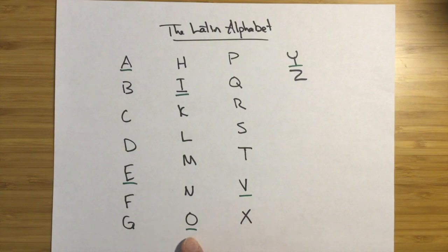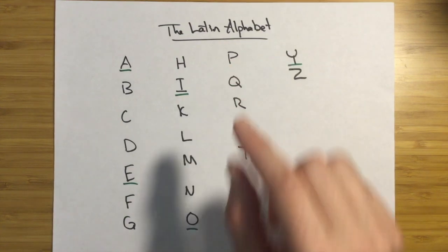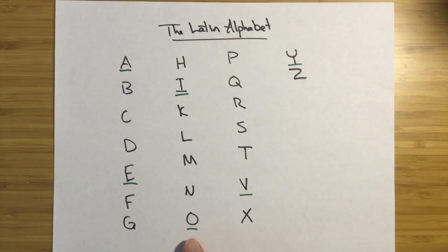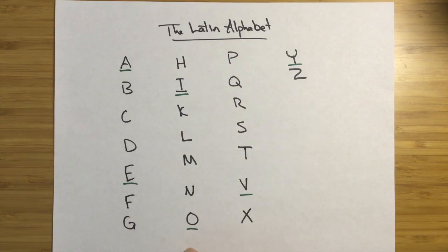O makes an O sound. Long O, short O. And you should be careful not to make this O. You should make it O. But it's not a big deal. So essentially don't put a W at the end of it.